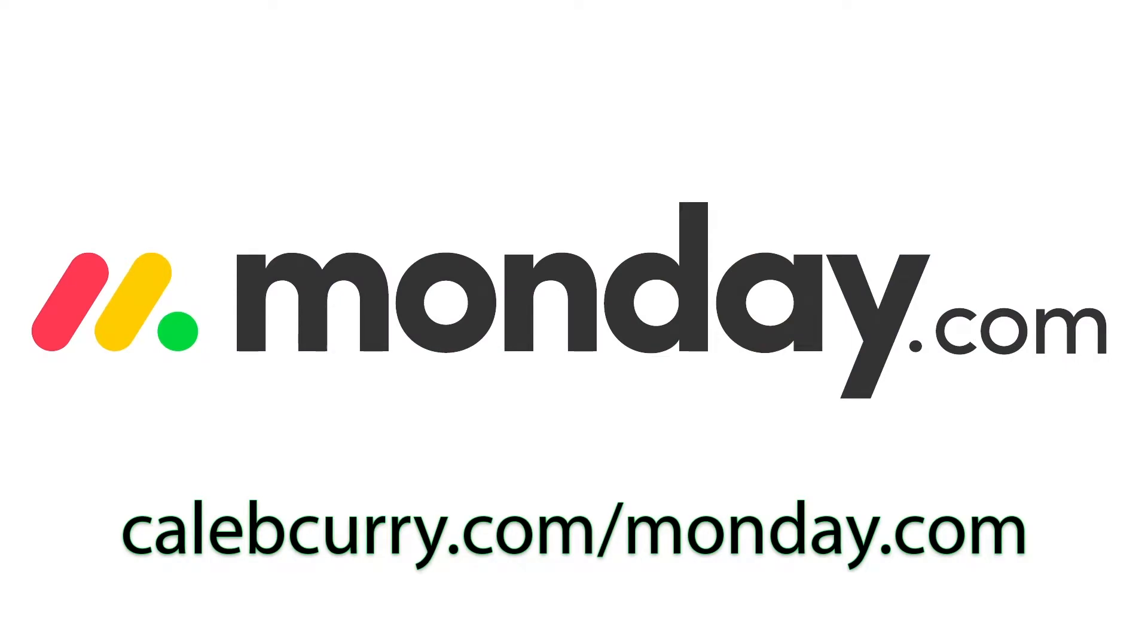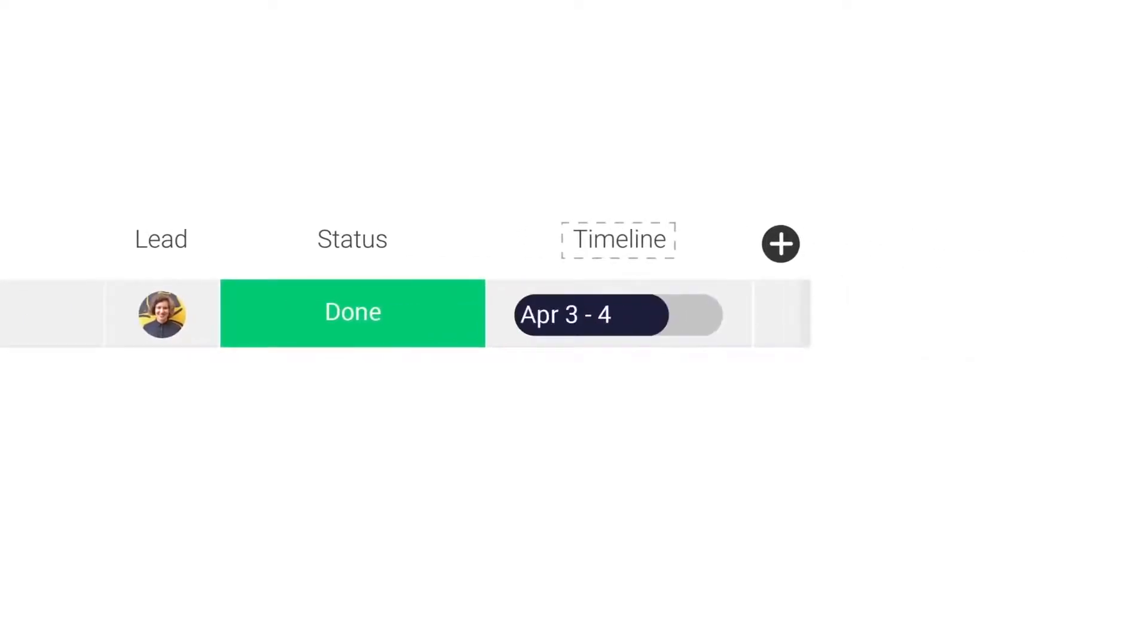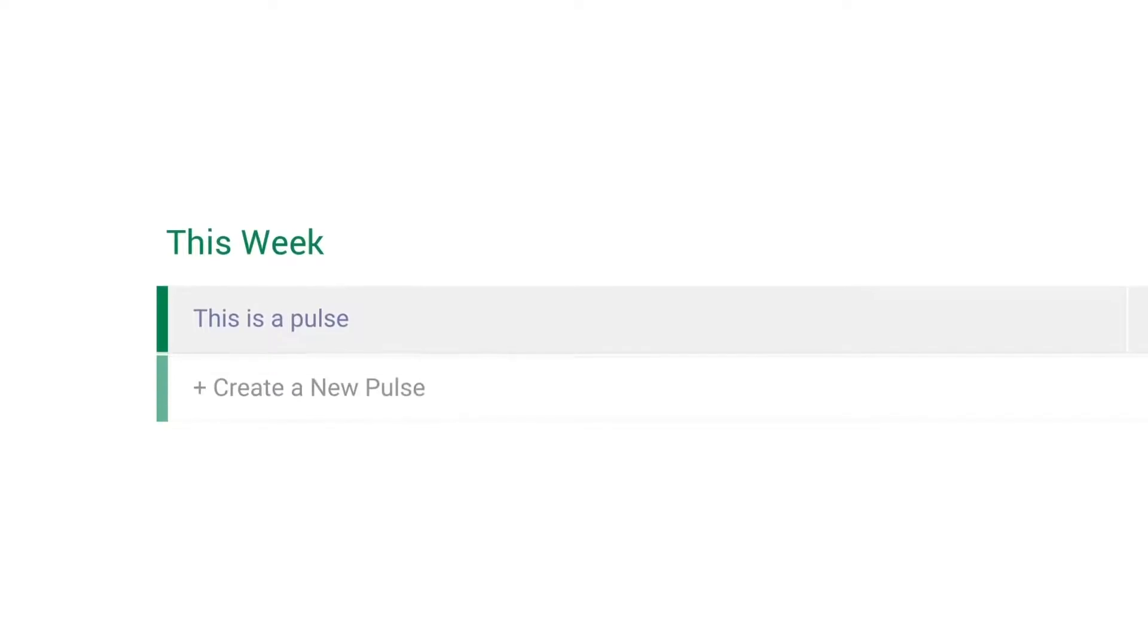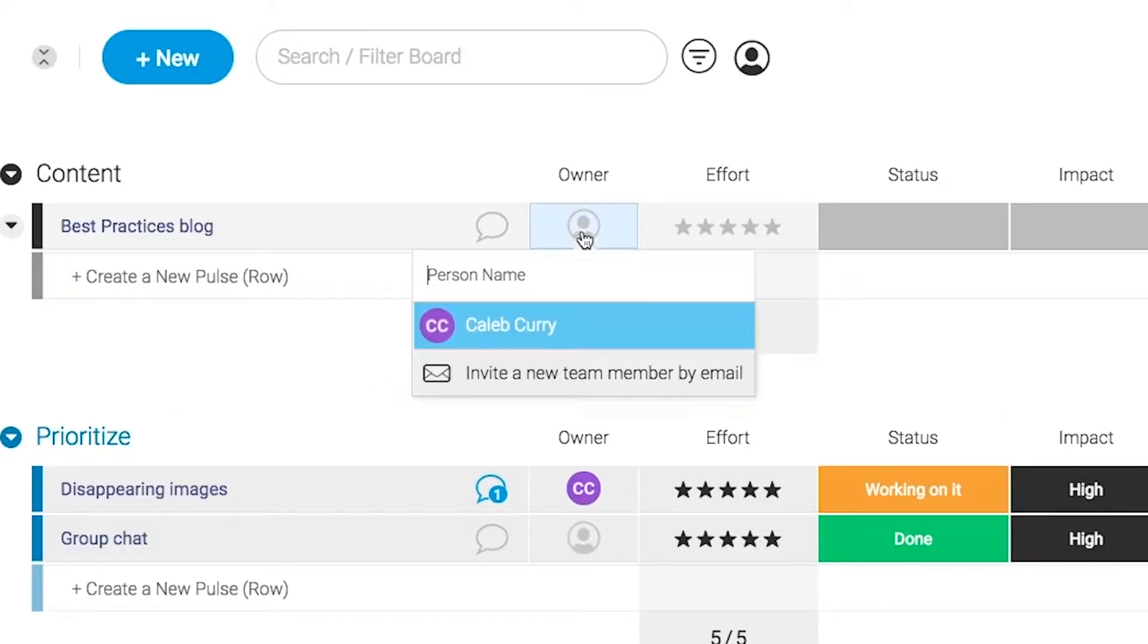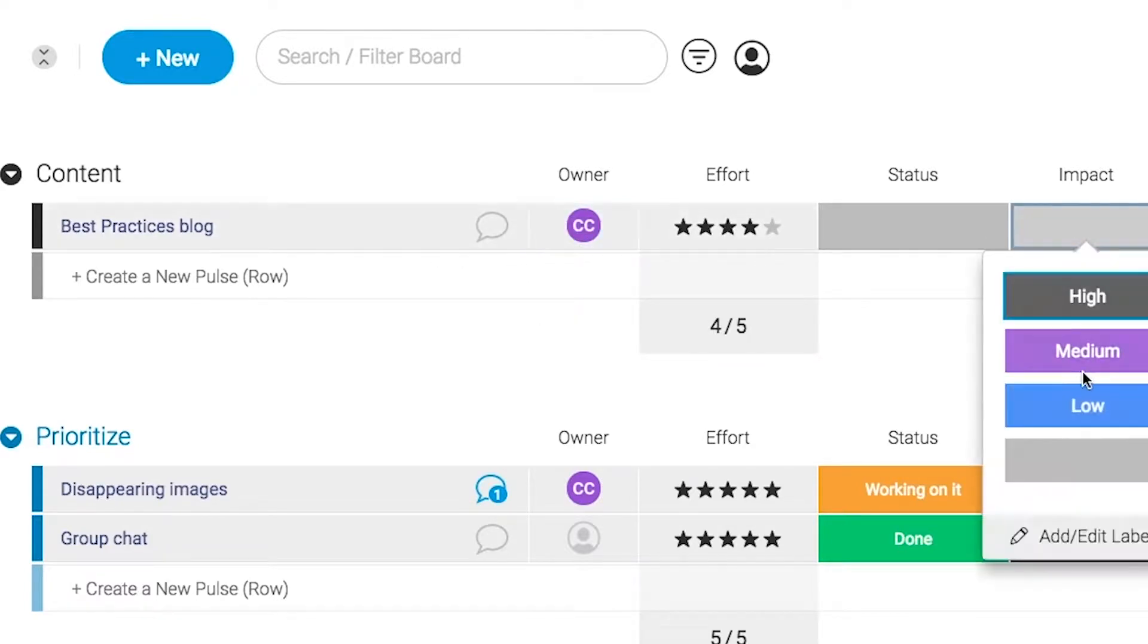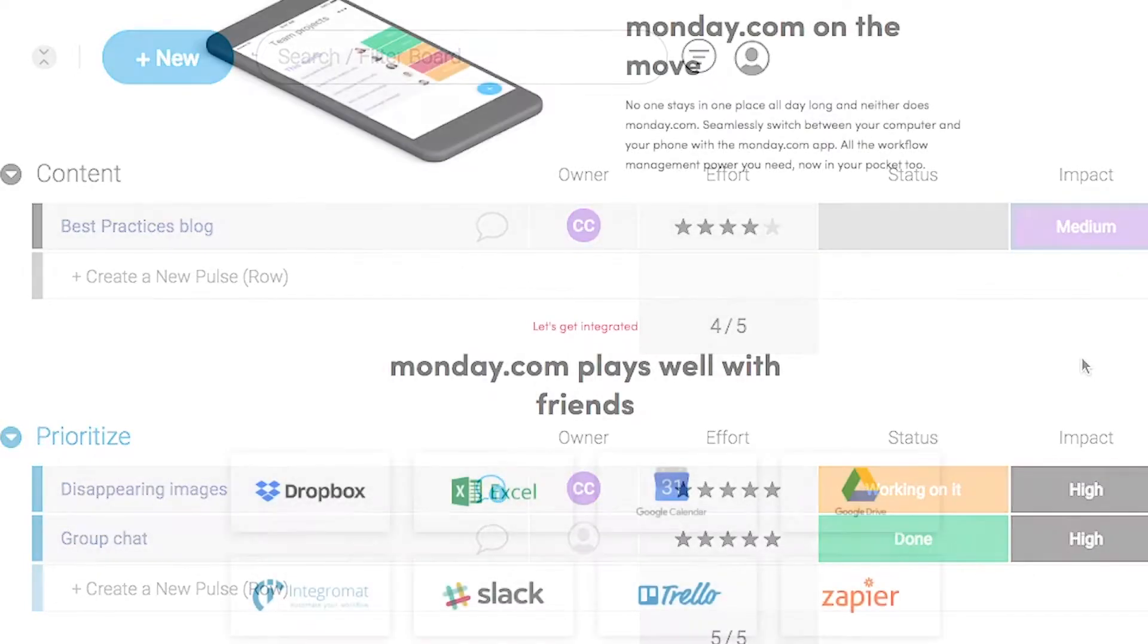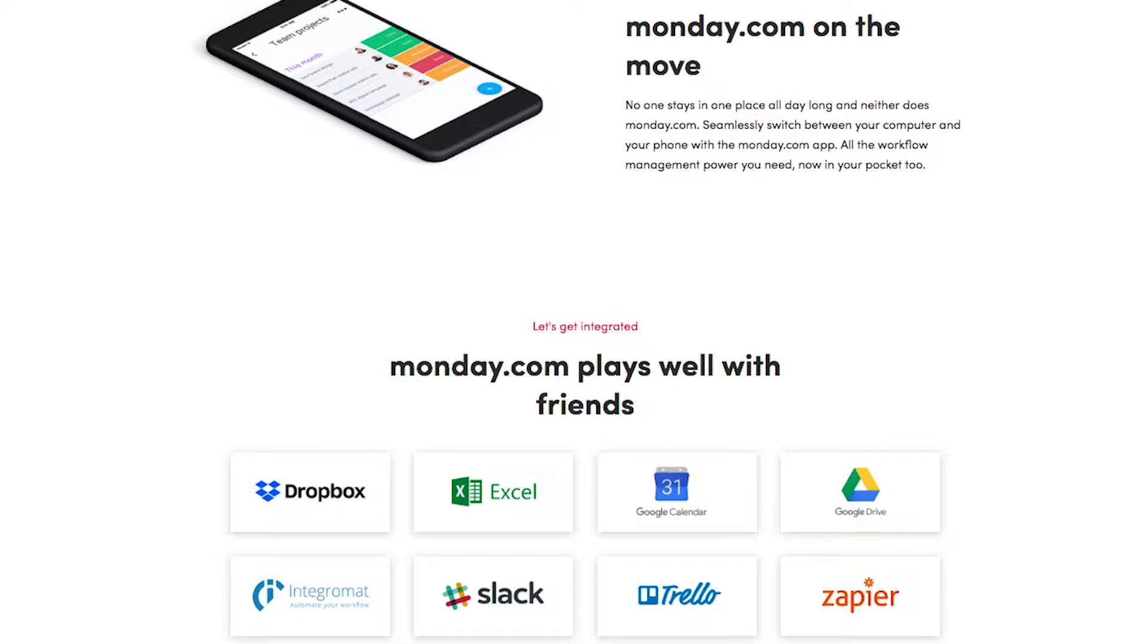Monday.com is your visual project management solution. This is the tool that allows you to see where every task or project stands with a single glance, with a fully customizable interface, you can create the exact workflow that you need for you and your team to get stuff done. Monday.com is available on mobile and integrates well with some of the most popular tools out there. So get your life in order by giving it a try for free, link in the description.